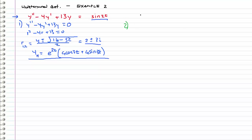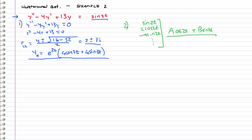Let's move on to step two: determining the particular solution form. Starting with the right-hand side, sine of 2t, and differentiating it repeatedly: sine 2t, then 2 cosine 2t, then negative 4 sine 2t — the pattern repeats between sine and cosine. To represent every possibility in this list, we assume the form a cosine 2t plus b sine 2t, where a and b are undetermined coefficients.